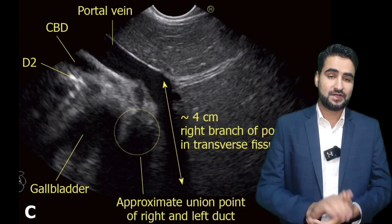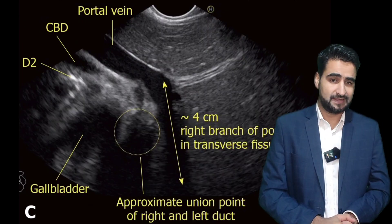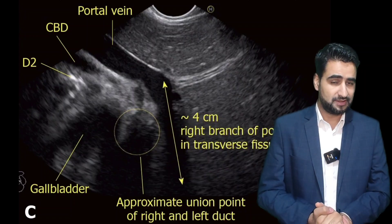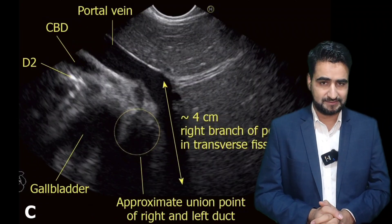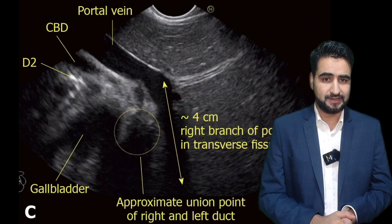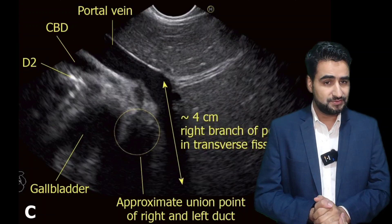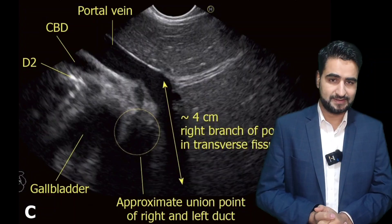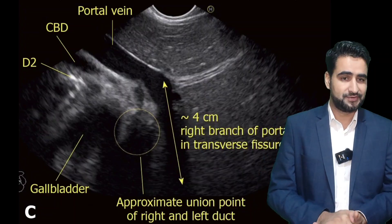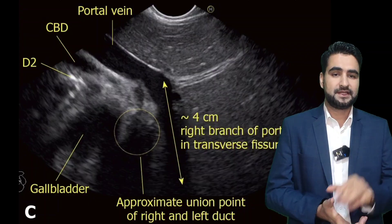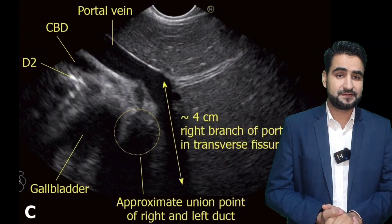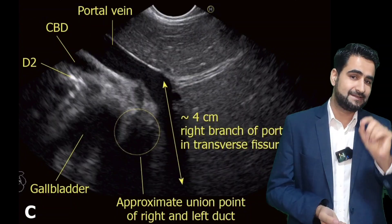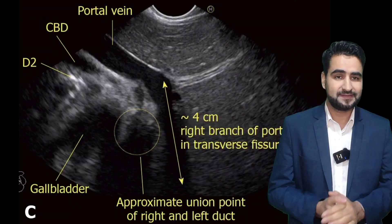Next, in this image, we focus on the transverse fissure itself. The breadth of this fissure — the distance within which the right branch joins the left — is roughly four centimeters. Several landmarks become visible here: the D2 segment of the duodenum may appear inferiorly, the gallbladder might also be seen anterior to the portal structures, and the portal vein continues horizontally as it branches. This four-centimeter segment is clinically relevant as it is the operative field during hepatobiliary surgeries and an essential reference during EUS-guided interventions.